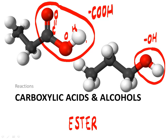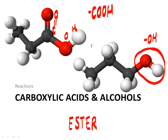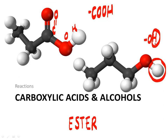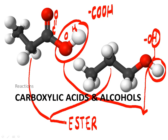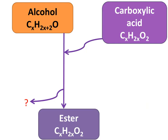What happens when these two react with one another is that the H from the carboxylic acid comes out and reacts with the OH from the alcohol. The two main parts of those two compounds then react with one another to form the ester. So there are two products: the ester and this other thing.